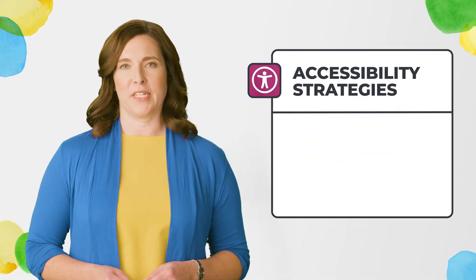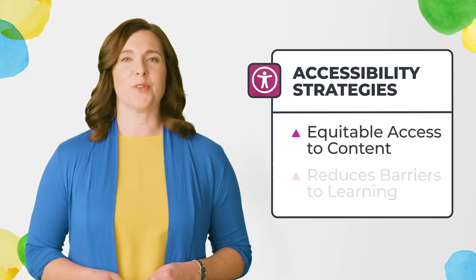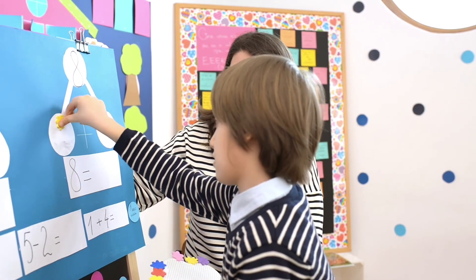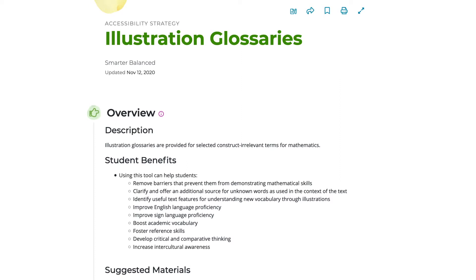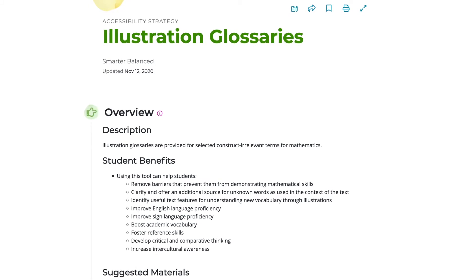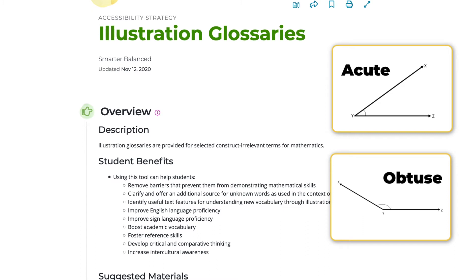Now let's look at accessibility strategies. This type of embedded strategy provides students with equitable access to content and reduces barriers to learning. For example, a bilingual student who speaks English as a second language may need specific resources to help them interpret the information. A teacher may use illustration glossaries with bilingual students during a math lesson. These glossaries provide students with pictures of academic vocabulary, such as acute and obtuse angles, to support student access to the content and develop their academic language in English. Both formative assessment and accessibility strategies are designed to be flexible and can be used across instruction and content areas.